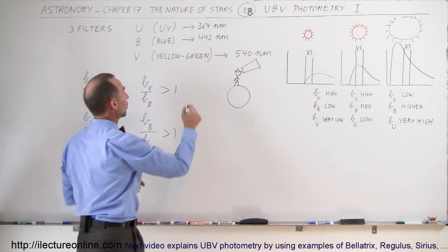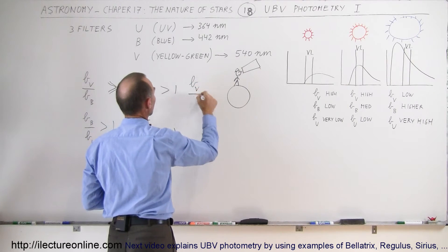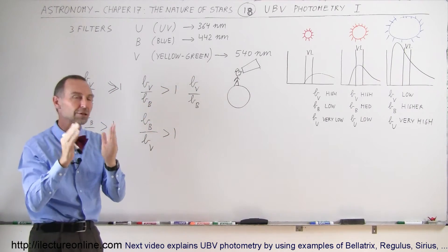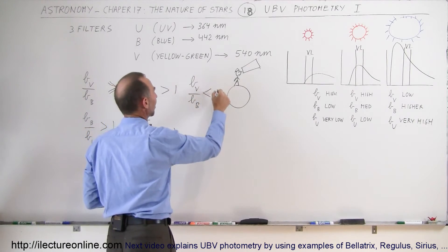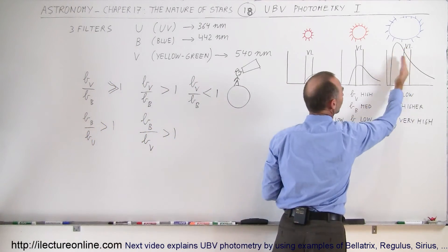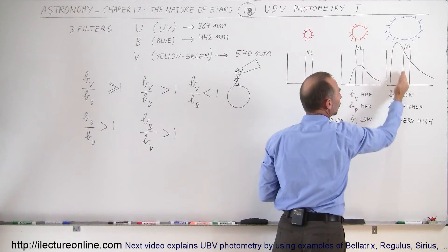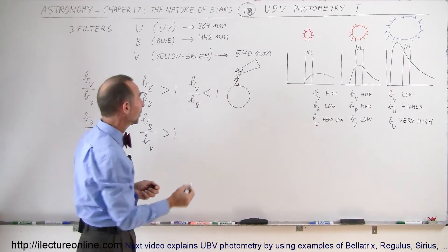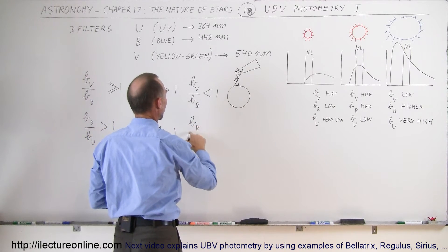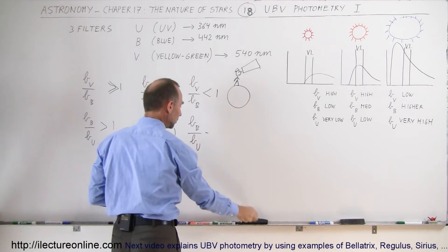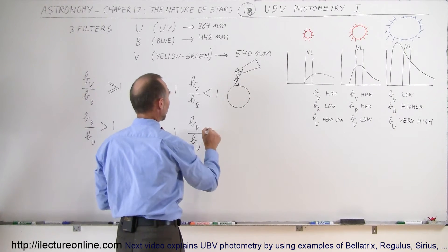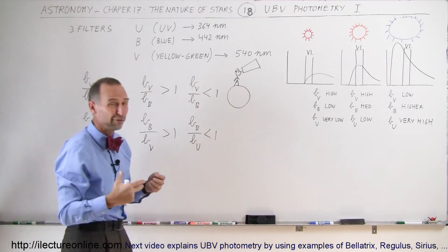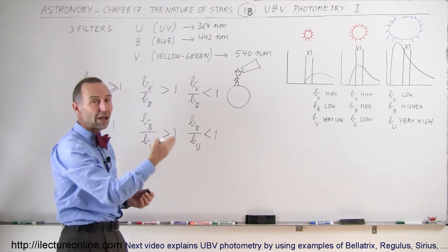When we look at a very bright blue star, we take the ratio of visible light compared to blue light — the amount of light coming through at visible versus only at blue — and we find that ratio is less than one. This shows the highest intensity falls to the left of visible light, meaning the blue spectrum has more intensity than the rest of the visible light spectrum. Then comparing blue filter output to UV filter output, that ratio is also less than one. If both ratios are less than one, we're probably dealing with a very bright blue star or a very hot white star.